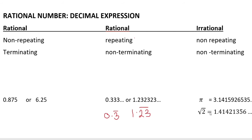Now, the decimal expression of rational numbers. We will look at how a decimal number can be rational or irrational. There are two possibilities.